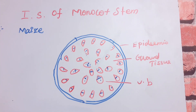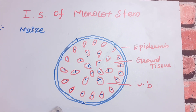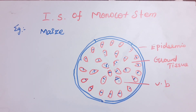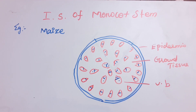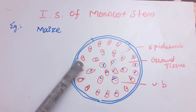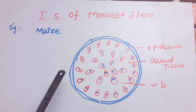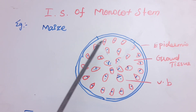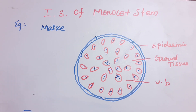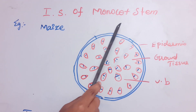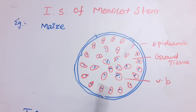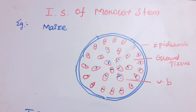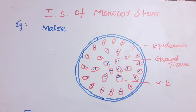Now let's talk about the monocot stem. First, let's look at the ground plan. The example of the monocot stem is maize. If you compare it to the dicot stem, in the monocot stem there is no epidermal hair — epidermal hair is absent.